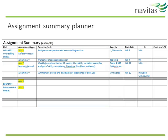Let's look at an assignment summary planner. This is where you transfer all of the essential assignment information from your unit outlines onto one summary sheet. At a glance you can see when each assignment is due, the length and the weighting. It's a good idea to create this as early as possible in the term to create an awareness of all your assessment tasks so none are overlooked. It helps put all the information in one place and keeps you mindful of the preparation needed for your assignments as you study.